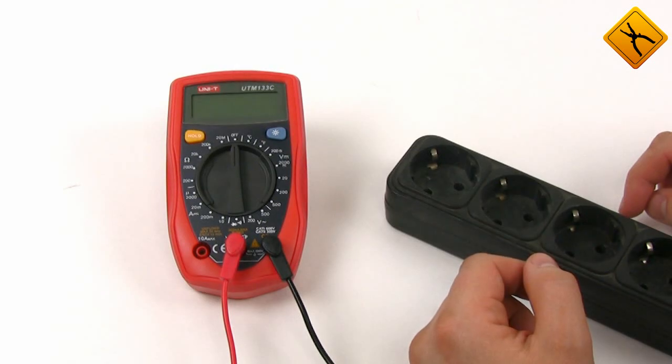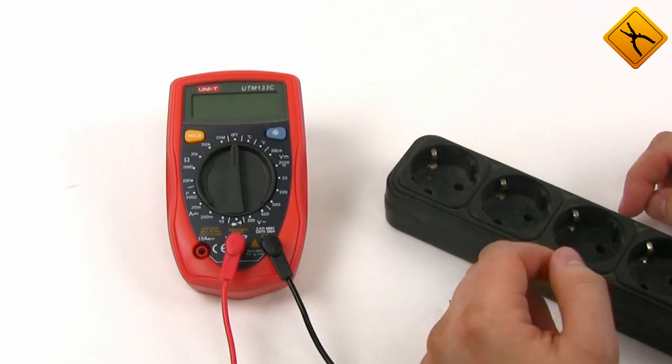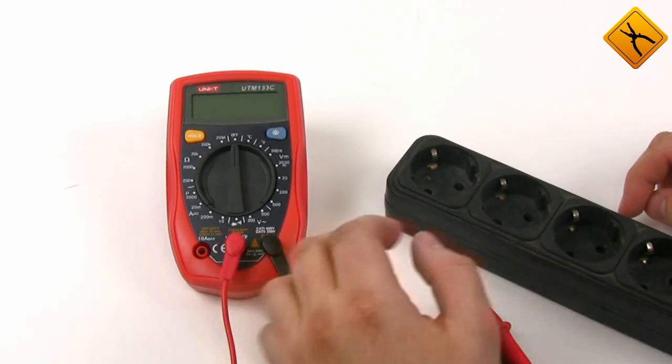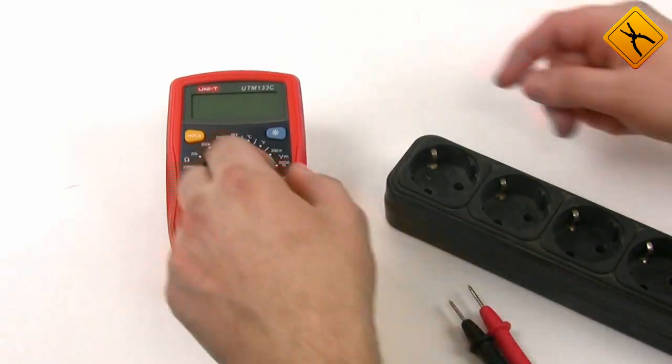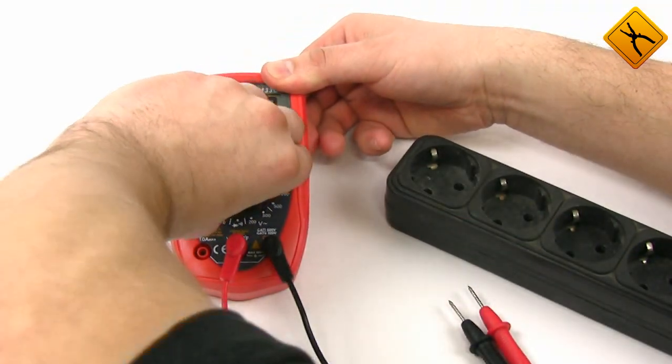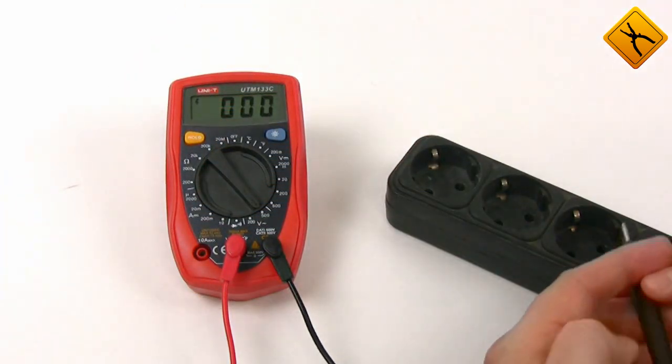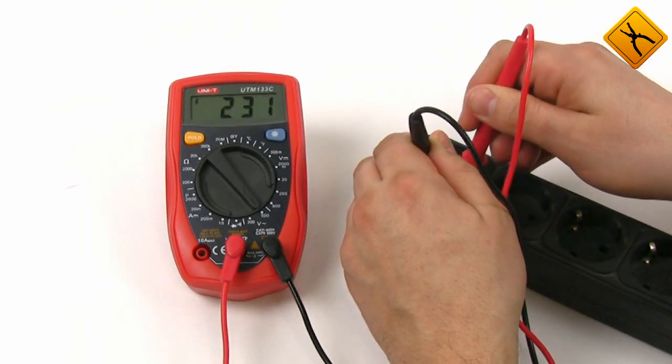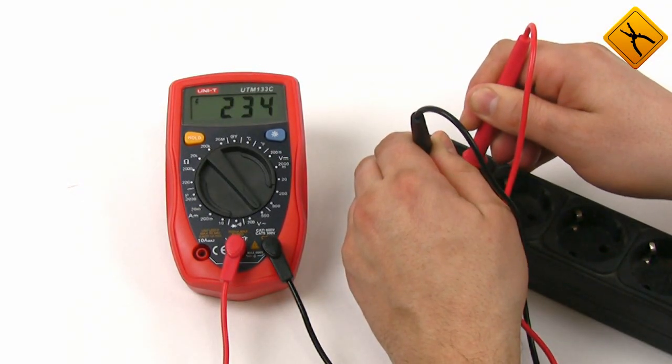Let's demonstrate the electric line voltage measurement. The probes are already connected. We turn the rotor switch to 500 volt AC. So we have the voltage of 234 volts.